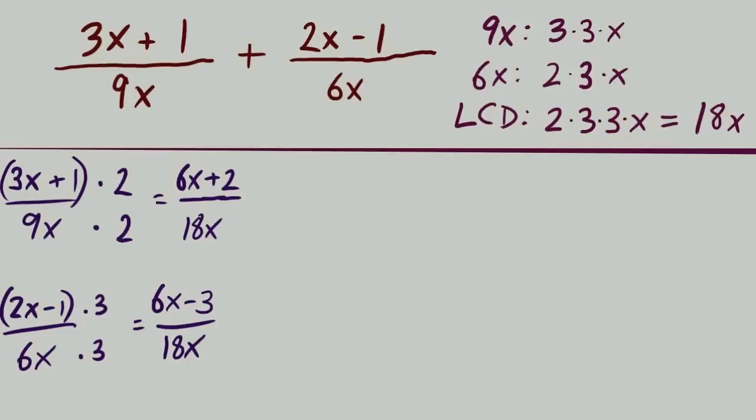Getting to the finish line. Our denominators are the same. So right away, we're putting our two fractions together into a single fraction with that LCD, the 18x in the denominator. We combine the like terms in the numerator. 6x with 6x is 12x. Positive 2 with negative 3, negative 1.